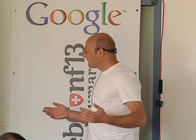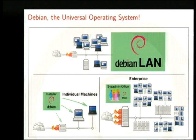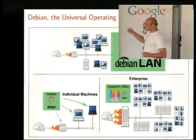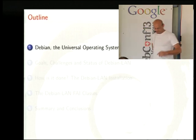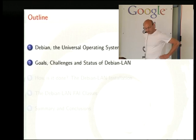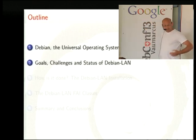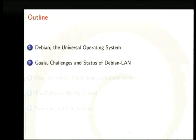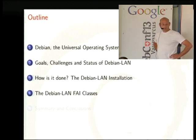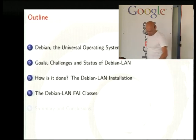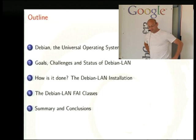Debian LAN tries to complement Debian and make it possible — or simplify it — to install Debian in small or middle-sized environments. The outline of the talk: introduction, goals, challenges, and status of the Debian Local Area Network project, how it is done and how it works, a closer look at FAI and how FAI works, then a summary and conclusion.